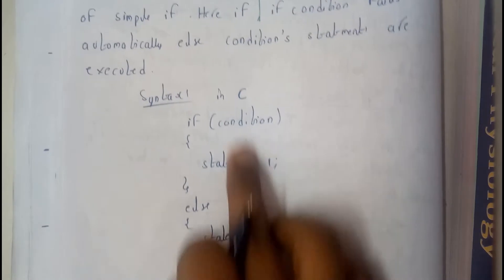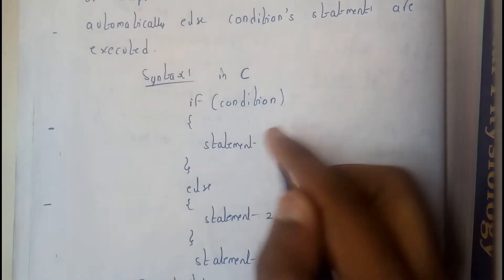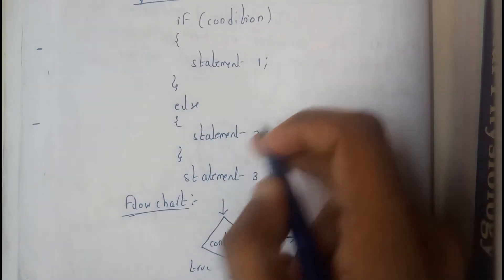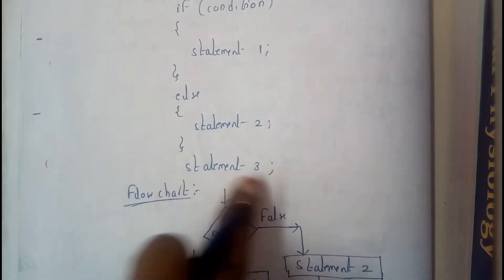Let us consider the syntax in C. If condition, statement 1, this if block is closed. Else, else block started, statement 2, else block closed, and statement 3.